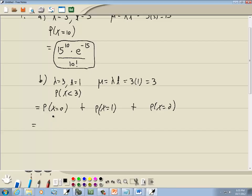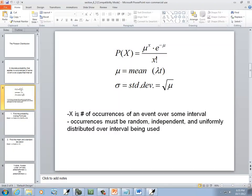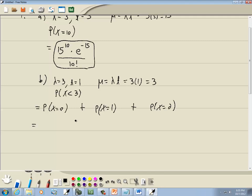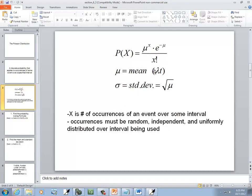So from the formula, we got mu to the X power, mu was 3, to the X power, which is 0. And then E to the negative mu, so E to the negative 3, over X factorial, which is 0 factorial.